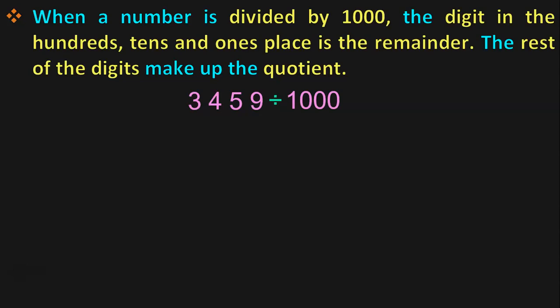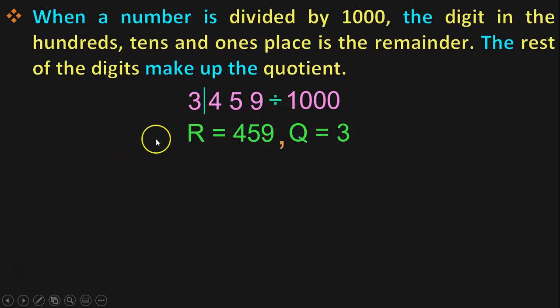Let us take the example of a 4-digit number, 3,459 divided by 1,000. Here we should draw a line after the 100's place. The digit in the 100's, 10's and 1's place will be the remainder when you divide by 1,000. So, the remainder here is 459. The rest of the digits make up the quotient — we have 3. So, the quotient is 3 and the remainder is 459.